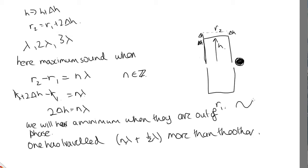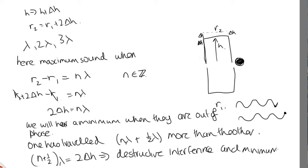At that point, one of them has gone like this. The other one's gone an extra half wavelength. So what we're adding together is this and this, and those will cancel each other out. So when we have n plus 1 half lambda is equal to 2 delta h, we have destructive interference and minimum sound.